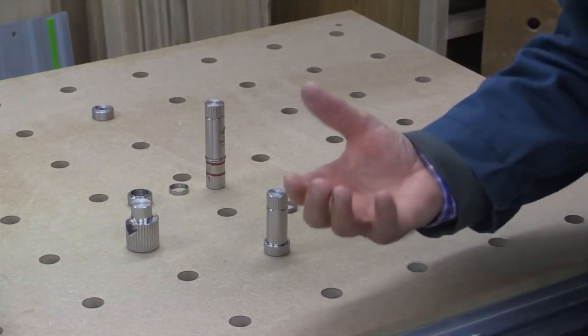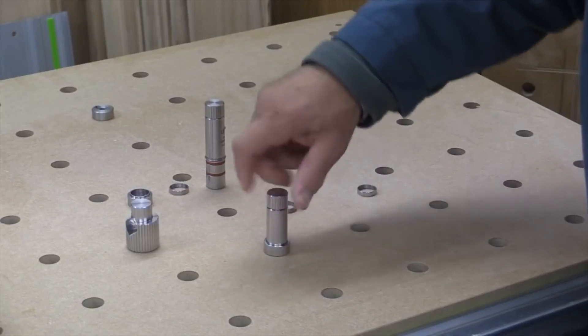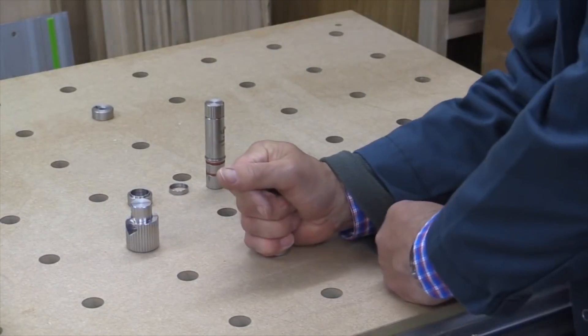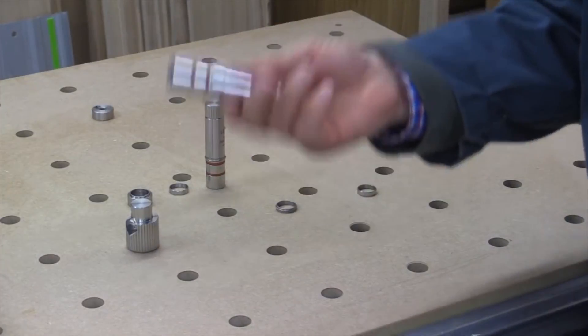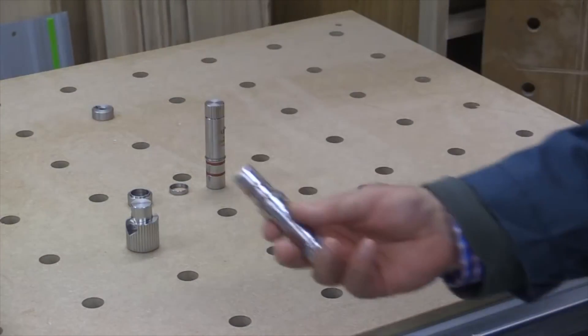So there's no need to go under the bench with the Parf Superdog. You can do everything from above the bench. However, you can use this below the bench like so.